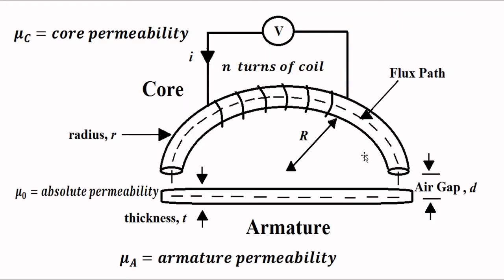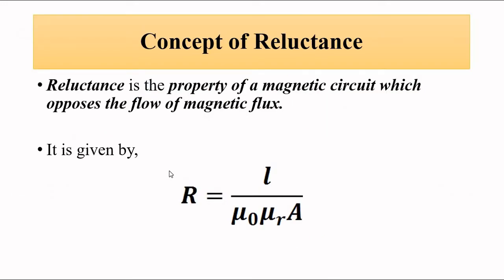The sensor looks like this: we have a ferromagnetic core and armature separated by an air gap. The core is semicircular and consists of a number of turns of coil connected to a voltage source; this defines the flux path. Small r is the radius of the core, t is the thickness of the armature, and d is the air gap distance. An important concept here is reluctance — the property of a magnetic circuit that opposes the flow of magnetic flux.